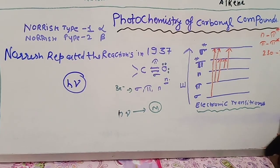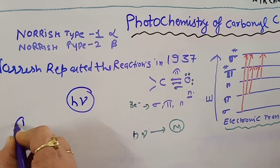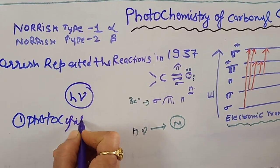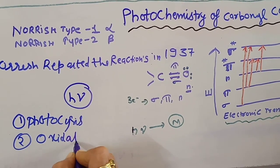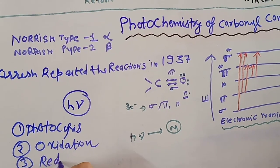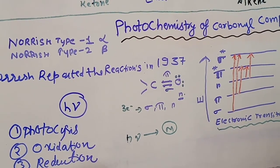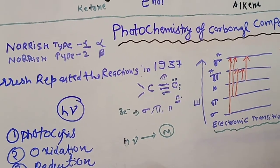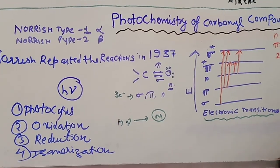Photochemical reactions can be classified into various categories such as photolysis, oxidation type reactions, reduction type reactions, and isomerization type reactions. Today we are basically concerned with the photolysis of the carbonyl compound.